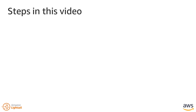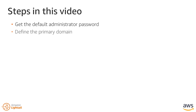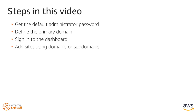The steps covered in this video include getting the default administrator password for the WordPress Multisite dashboard, defining the WordPress Multisite primary domain, signing into the WordPress Multisite dashboard, adding sites to the WordPress Multisite instance using domains or subdomains, and adding an address record to the DNS zone for the WordPress Multisite primary domain.